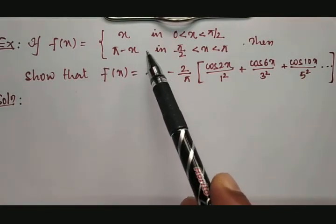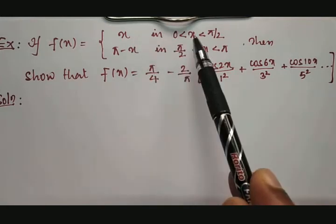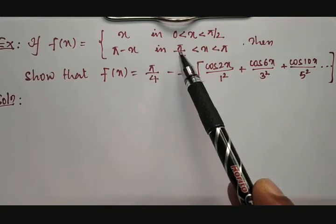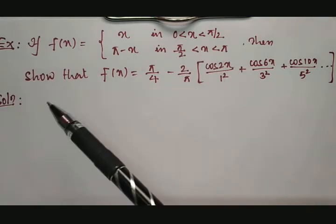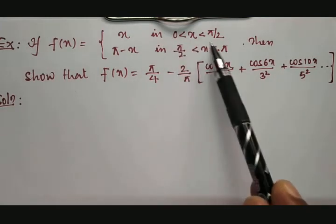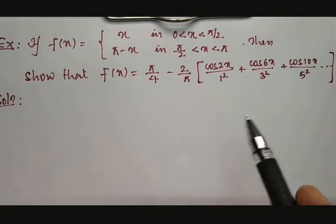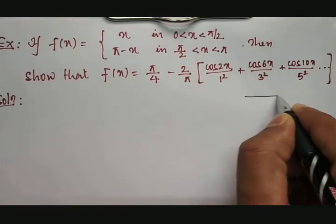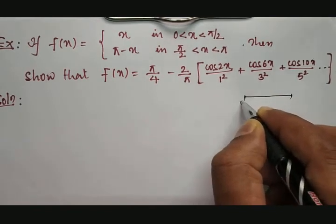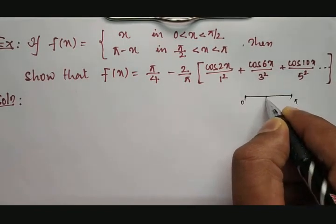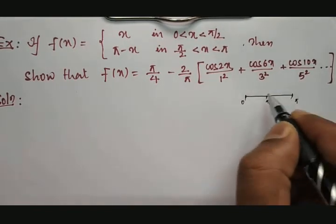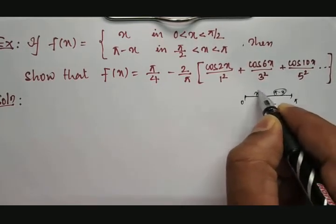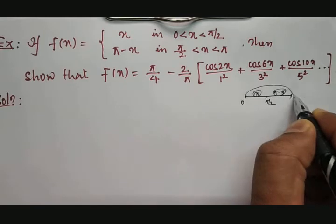If f of x is equal to a double-valued function: x between 0 to pi by 2, and pi minus x between pi by 2 to pi. The overall range is from 0 to pi — a half range — but it is segregated: here it is x, and here it will be pi minus x.